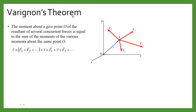Now let us see Varignon's theorem. This theorem is very important. It states that the moment about a given point O of the resultant of several concurrent forces — suppose we have several concurrent forces F1, F2, F3, F4, and these forces are concurrent meaning they pass through the same point.